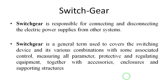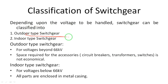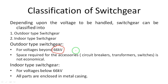Now, the main classification of switchgear depends upon the voltage to be handled. There are two types: outdoor type switchgear and indoor type switchgear. Outdoor type switchgear is used for voltages beyond 66 kV. In substations we have voltage levels of 33 kV, 11 kV, 66 kV, 132 kV, and 220 kV. For voltages beyond 66 kV we use outdoor type switchgear, and for voltages below 66 kV we use indoor type switchgear.